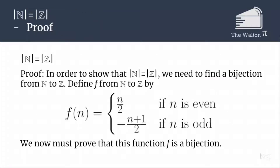We are going to prove that the cardinality of the natural numbers is equal to the cardinality of the integers. So we have to find a bijection from the natural numbers to the integers. The function listed here is one example of a bijection — it is not the only one, nor necessarily the best one. We have to prove that this function is a bijection: if n is even, we send it to n/2; if n is odd, we add 1, divide by 2, and make it negative.